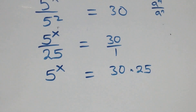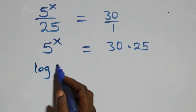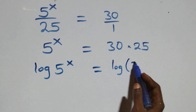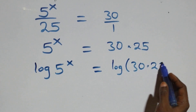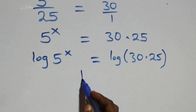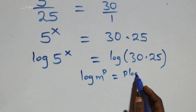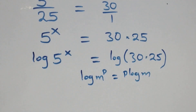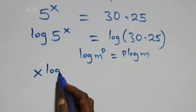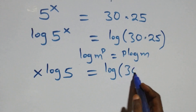The next step: we take the log on both sides. We have log of 5 raised to power x equals log of 30 times 25. We apply the power rule: log m raised to power p is the same as p log m. So this becomes x log 5 equals log(30 times 25).